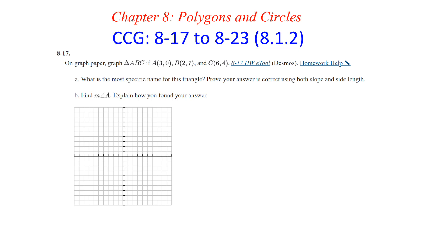We have the point (3,0), point (2,7), and the point (6,4). What is the most specific name for this triangle? Prove your answer is correct using both slope and side length.